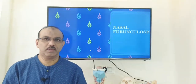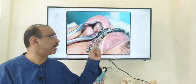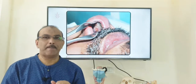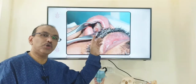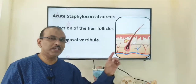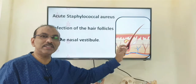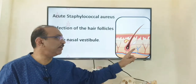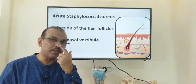Nasal vestibular furunculous. The nasal cavity — the anterior-most part of the nasal cavity, as shown in this picture — is a skin-lined area. Because it is skin-lined, there are hairs in that area as well. As you can see in this picture, the third marked line represents a hair follicle. When you have a bacterial infection in the hair follicle in the vestibular area of the nose, it is called nasal vestibular furunculous.